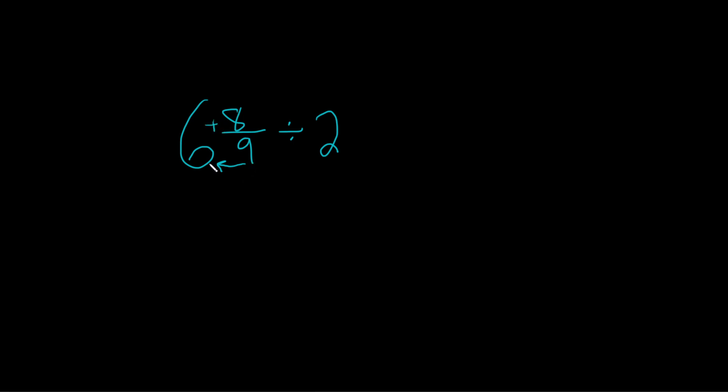Let's see. 9 times 6 is 54. 54 plus 8 is 62. So this is 62 over 9.